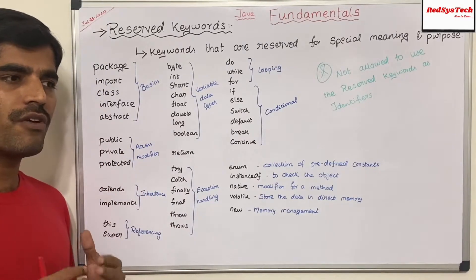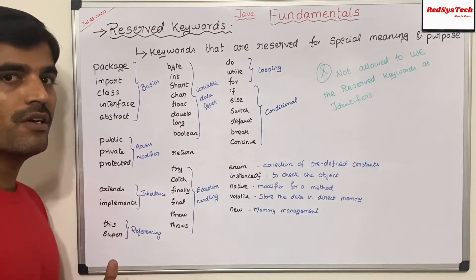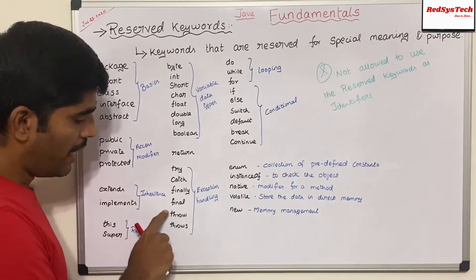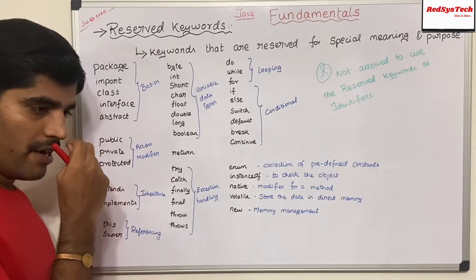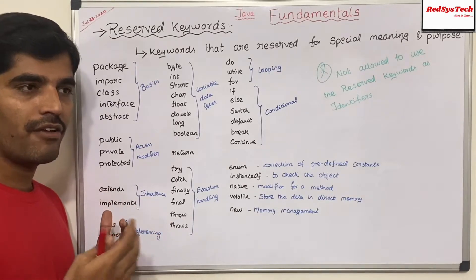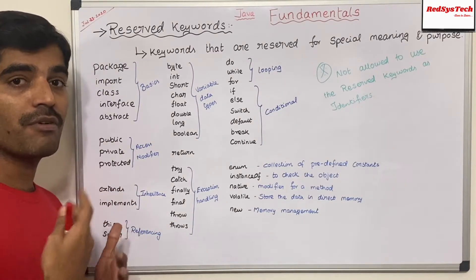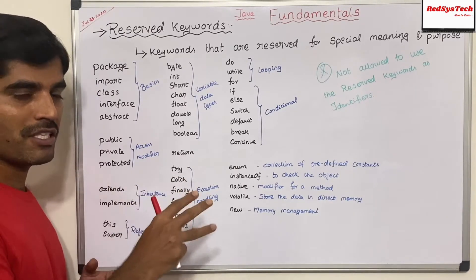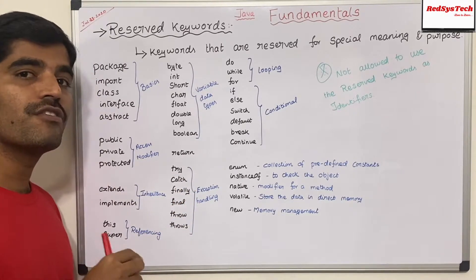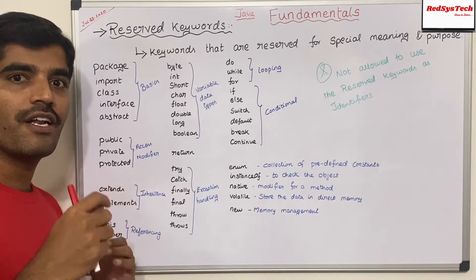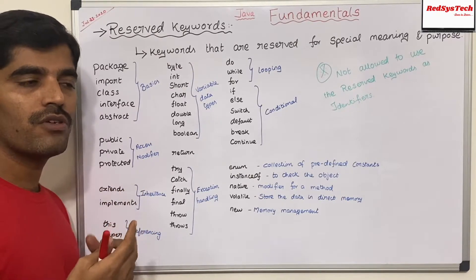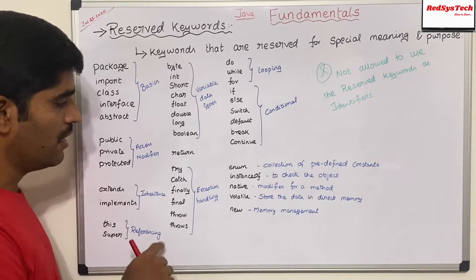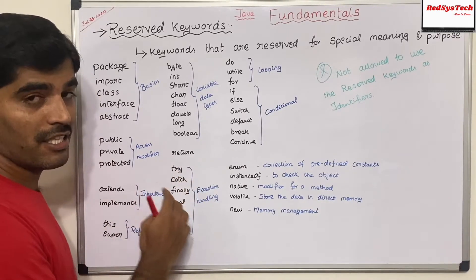And 'final' — if you want to make something a constant value for a particular variable, use the 'final' keyword. And 'throw' and 'throws': if I want to throw a custom or user-defined exception, I use the keyword 'throw'. 'Throws' is a keyword used at the method level, where you can declare exceptions like 'throws SQLException' or 'throws NullPointerException'. These are the keywords related to exception handling.